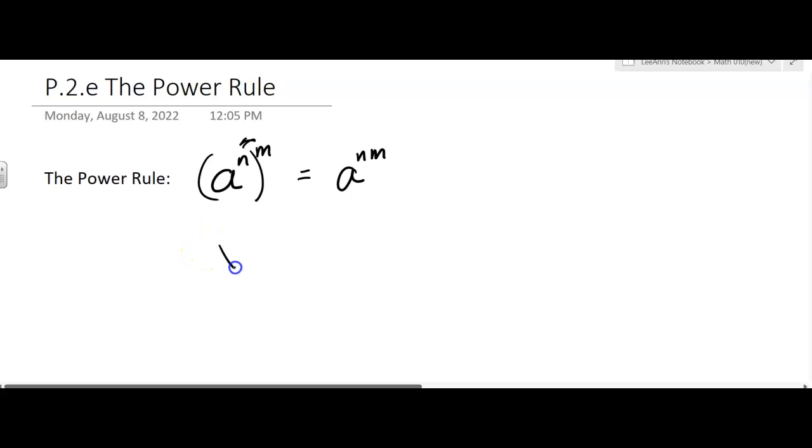Well, let's say you have x to the fifth to the seventh. Then you're going to have x to the fifth times x to the fifth times x to the fifth. Why do I pick these big numbers? I don't know. Five, six, seven of them, right? So how many fives is that?